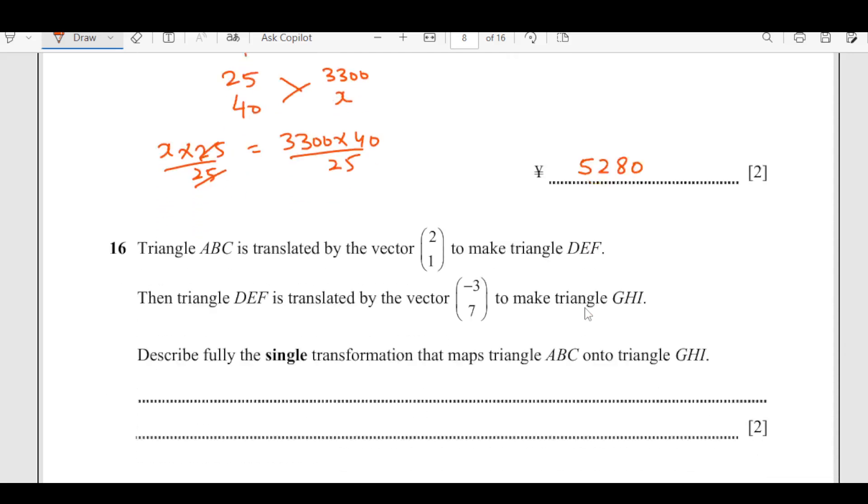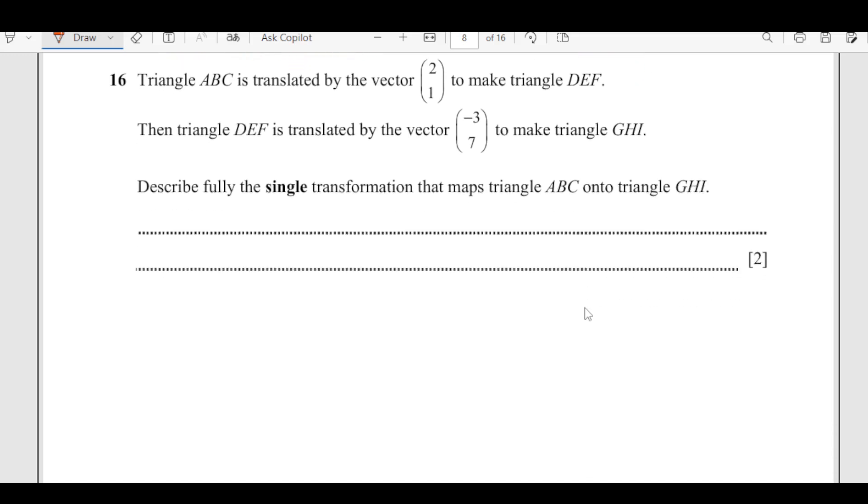Number 16, a triangle ABC is translated by vector 2,1 to make triangle DEF. Then triangle DEF is translated by this vector to make GHI. Describe fully the single transformation that maps from ABC to GHI.